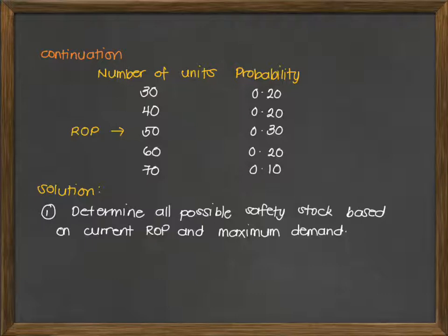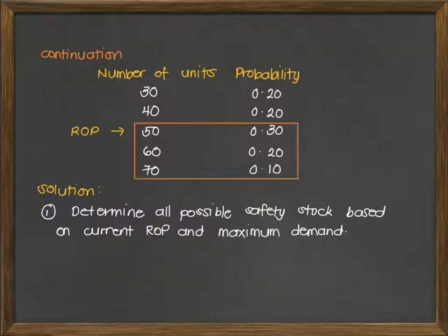So kung mag-30 or mag-40 man yung ating demand, wala tayong problem. The question is: ano ba yung mga possible scenarios kung saan possible na magkaroon tayo ng stock out? We are looking at the other spectrum of the given data, which is the maximum demand. Yung maximum demand natin is 70, and meron ding chance of getting a demand of 60. Kung wala namang 60 and 70 and yung maximum possible demand is only at 50, wala tayong problem.